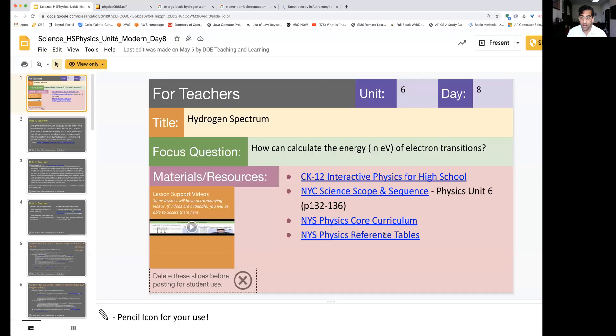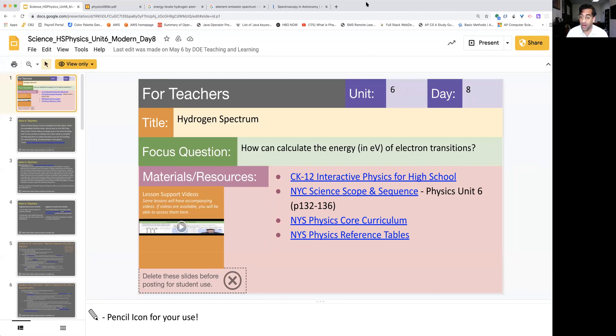And the focus question is how can we calculate the energy in electron volts of electron transitions? The reason why this has to do with both physics and chemistry is we are going to track energy in a way that relates to the way that we've been tracking energy in physics. However, we're going to look at subatomic particles and energy levels in the atom in a way that we did in chemistry.